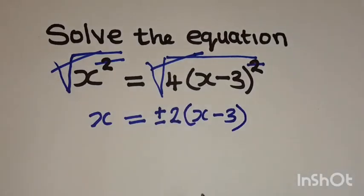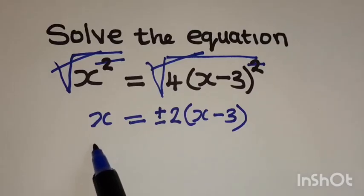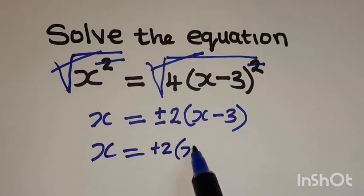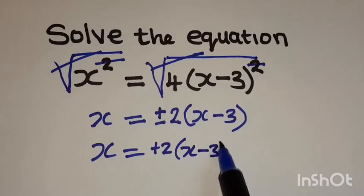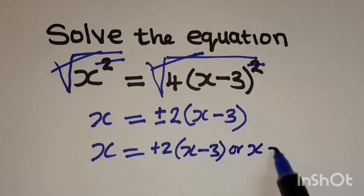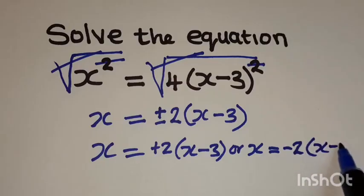Okay. At this stage, we have x is equal to positive 2, x minus 3, or x is equal to negative 2, x minus 3, like this.